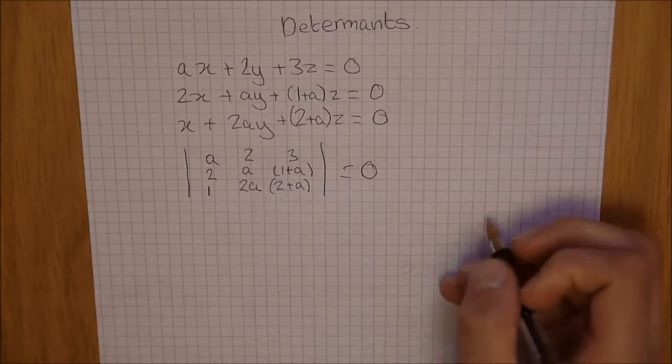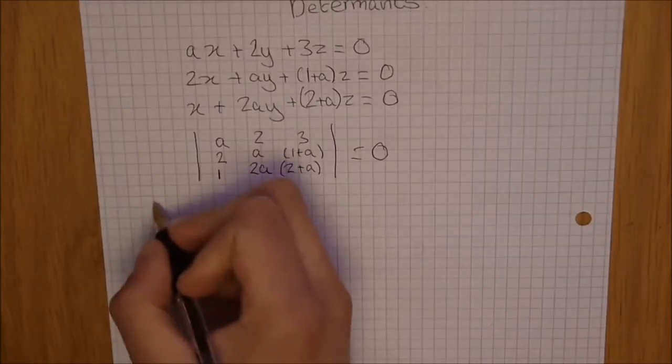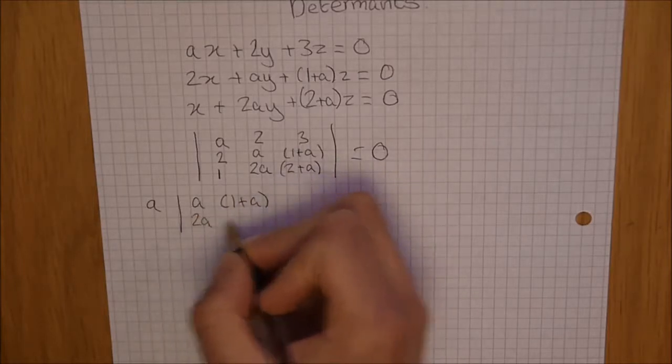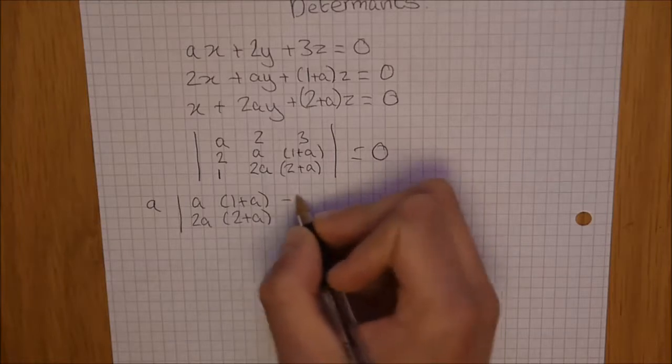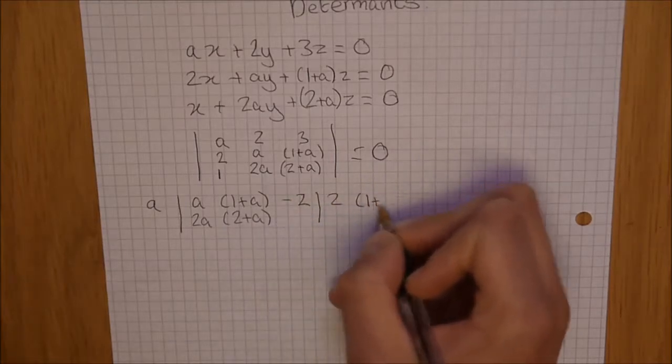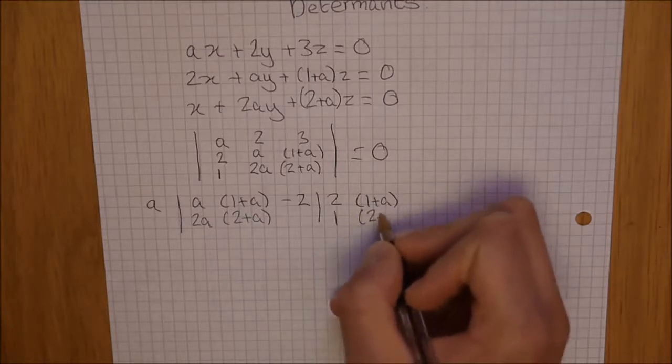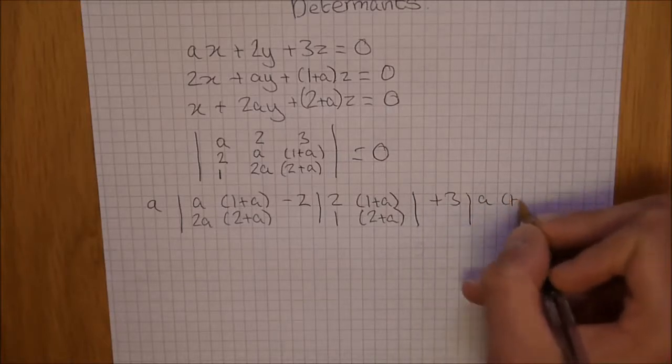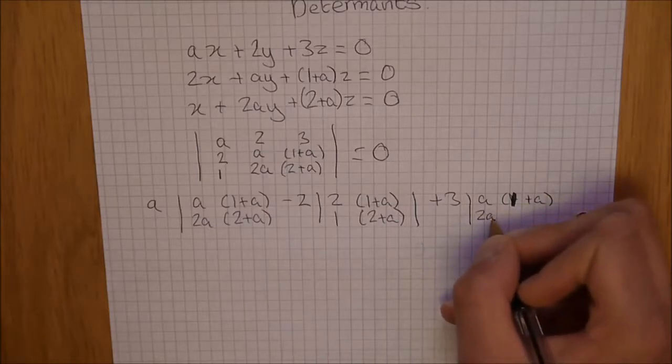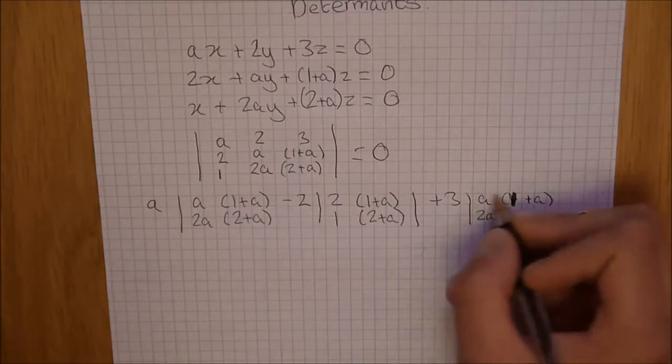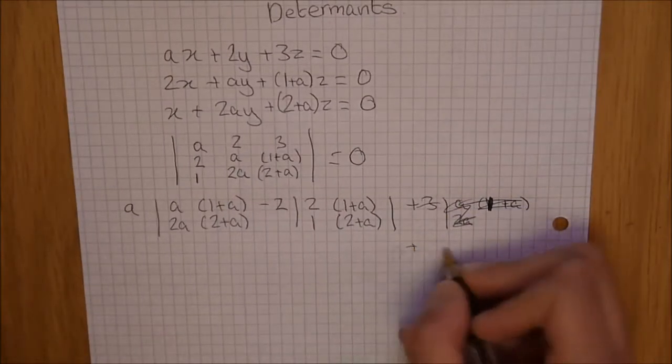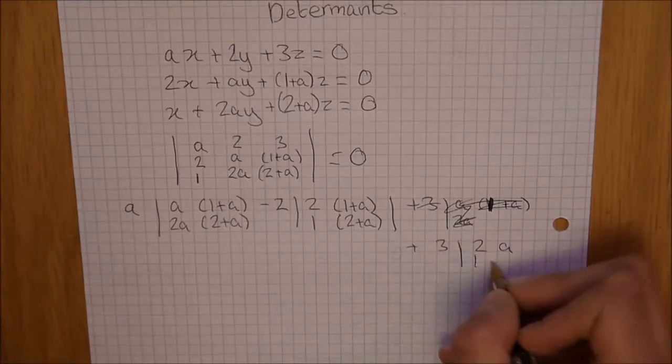So, as you can see, we can do this. a lots of a, 1 plus a, 2a, 2 plus a, minus 2 lots of 2, 1 plus a, 1, 2 plus a, plus 3 lots of, would help if I could write, 3 lots of 2a, 1, 2a.